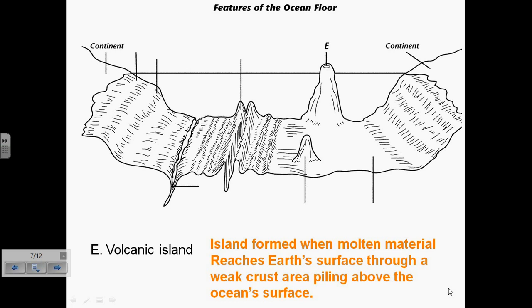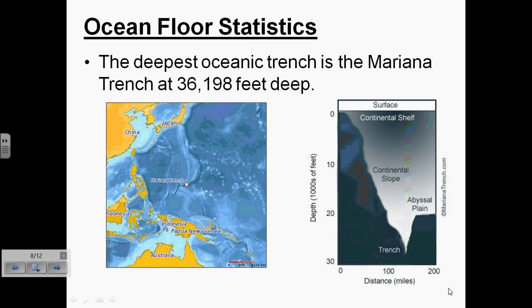Next, for letter E, we have a volcanic island. This is an island formed when molten material reaches Earth's surface through a weak crust area piling above the ocean's surface. So let's talk about some of these ocean floor features.